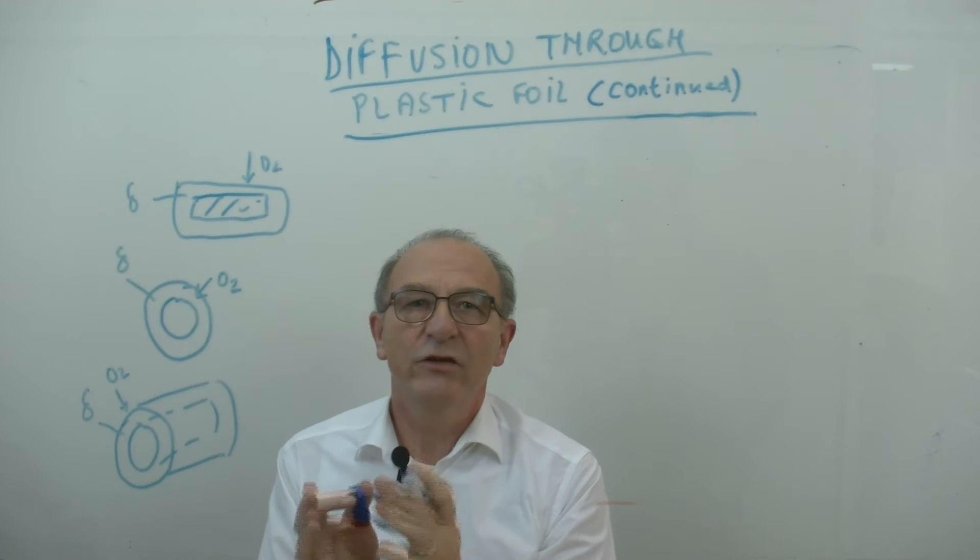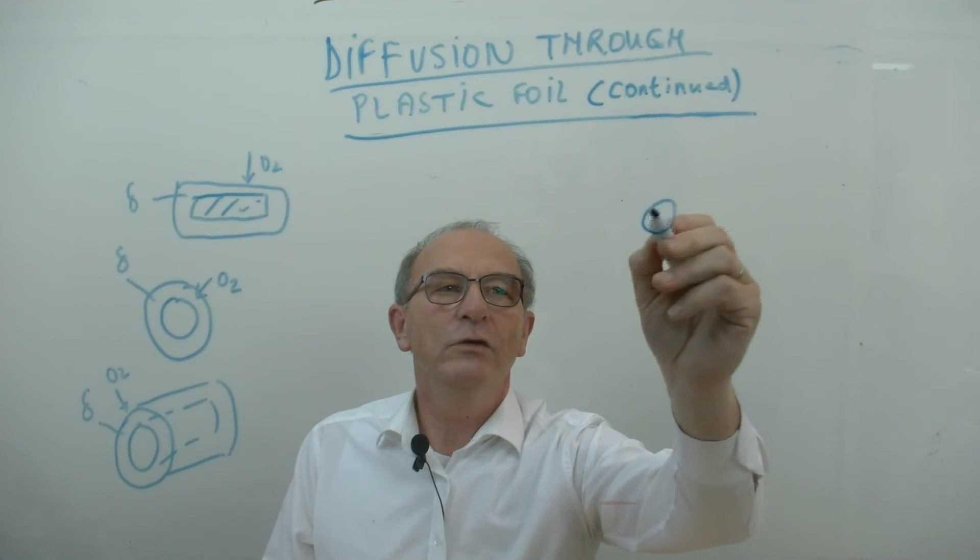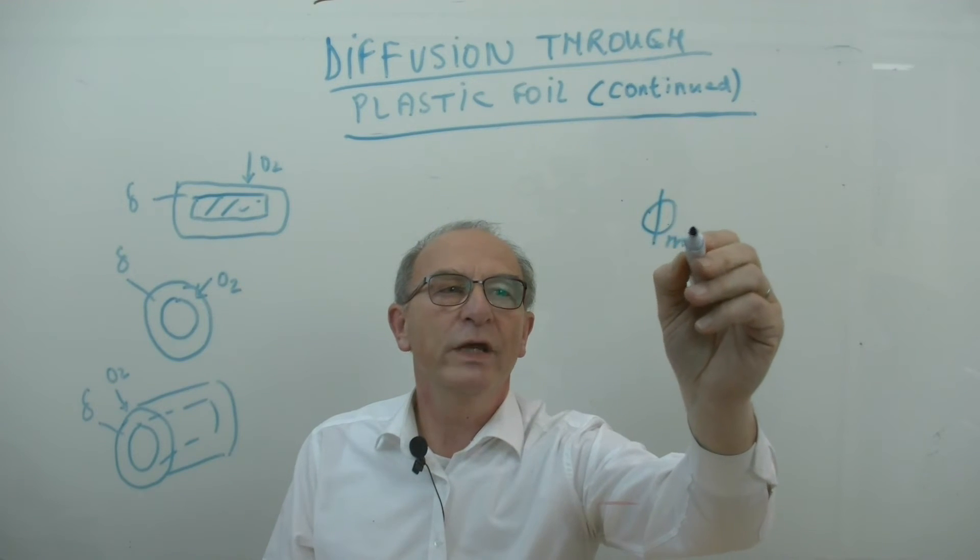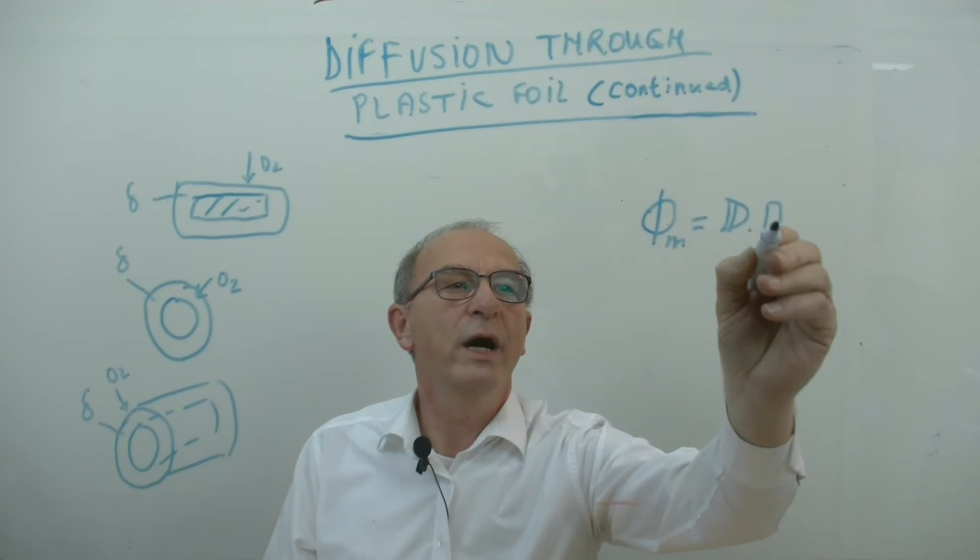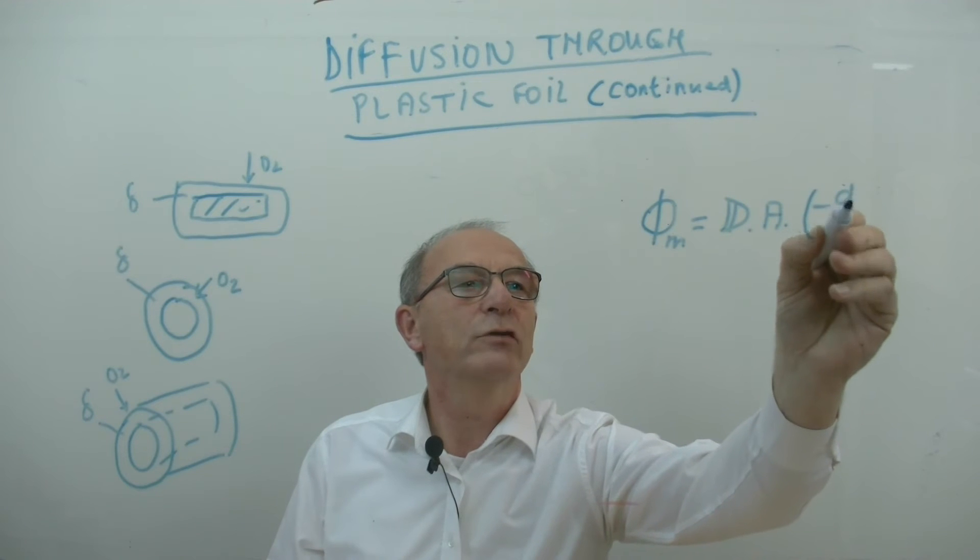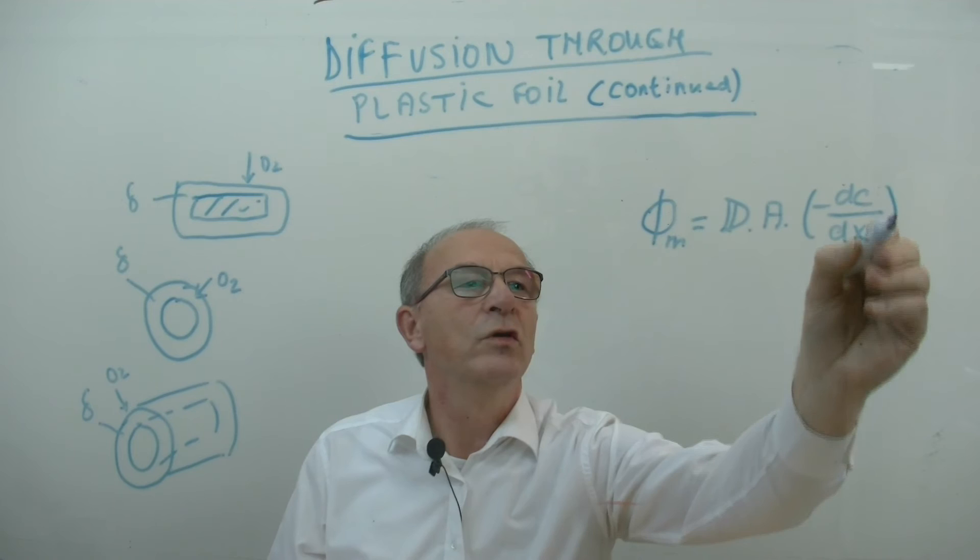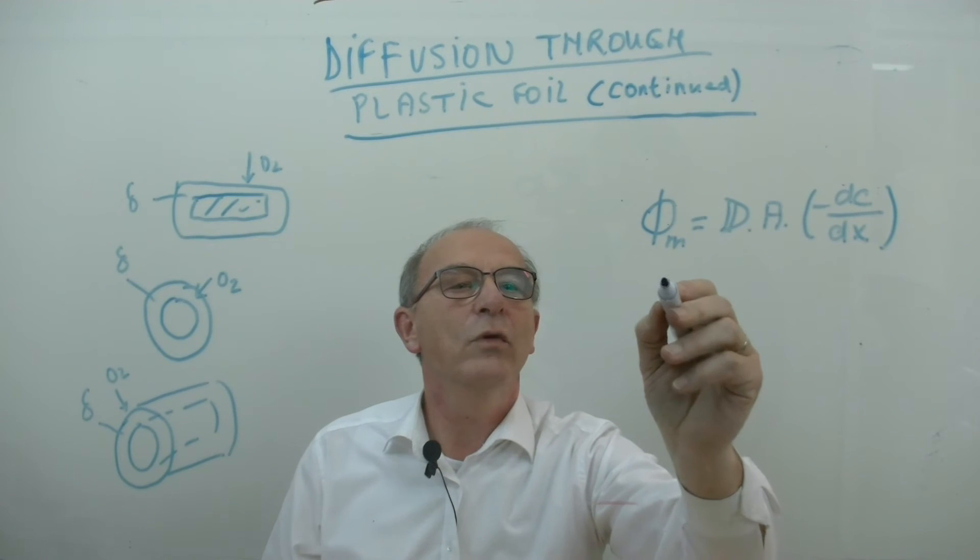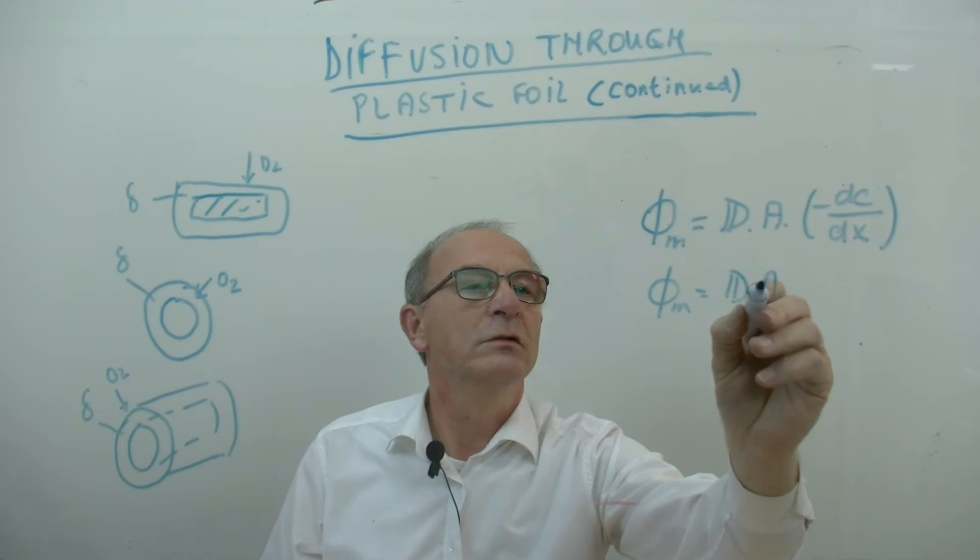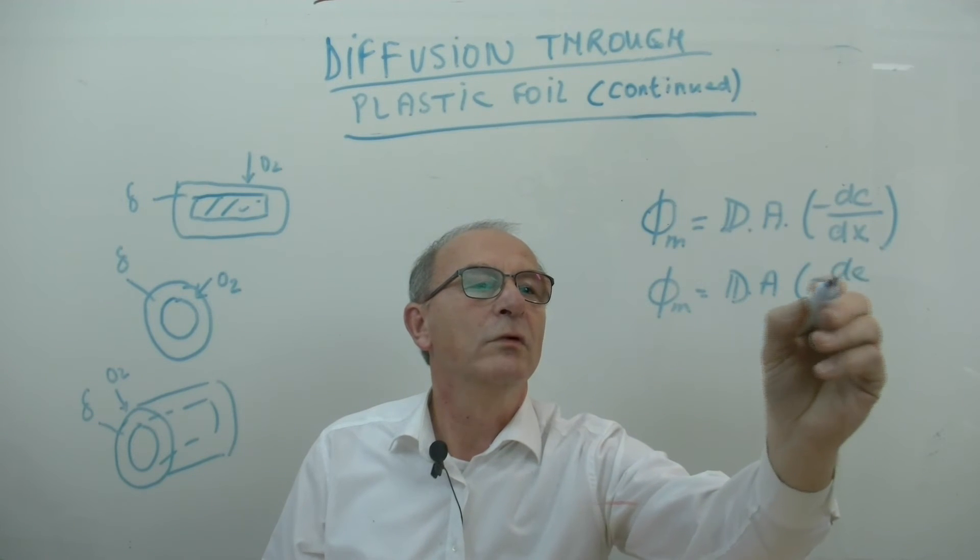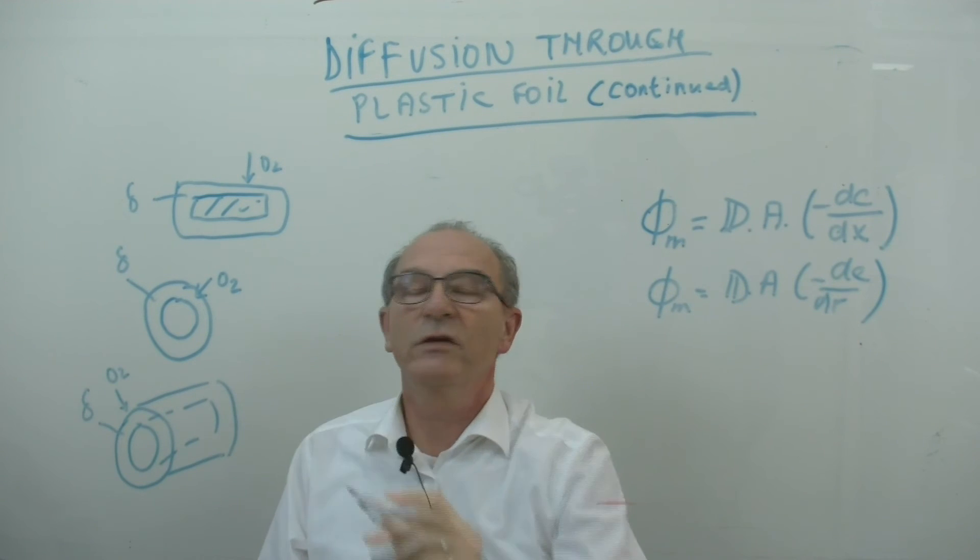If you want to set up the equations, it strongly depends on the geometry. We have seen that Fick's law could be written as the mass flow rate is the diffusion coefficient multiplied by the surface area, multiplied by the concentration gradient. And it could be x if we have a flat plate, or it could be the radius if we have a sphere or a cylindrical geometry.